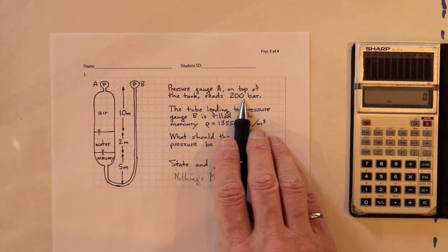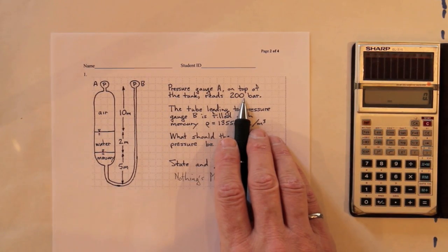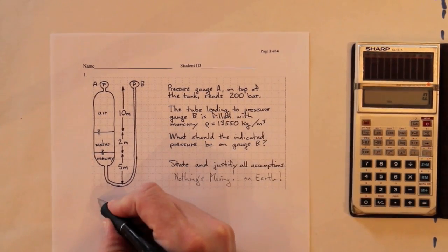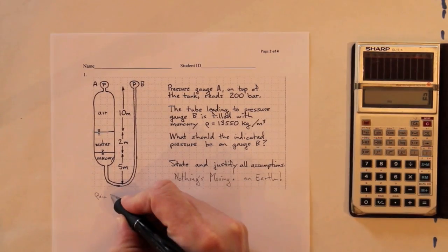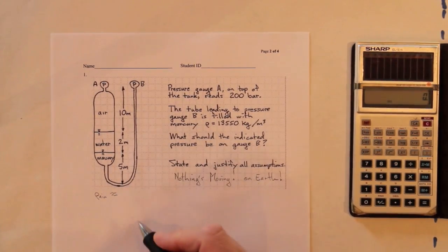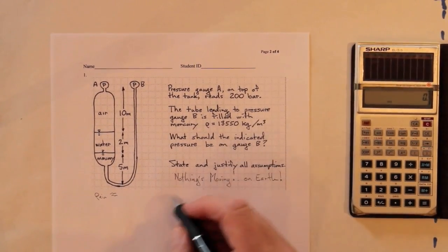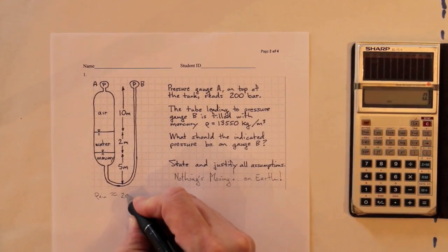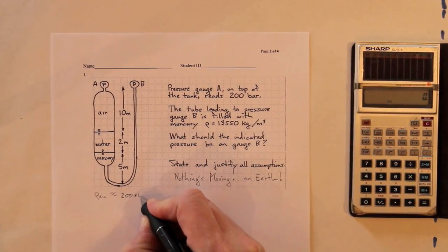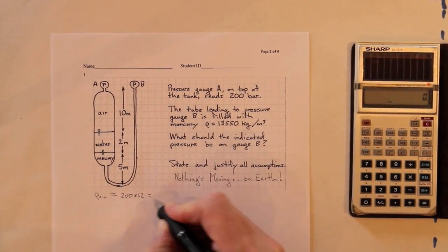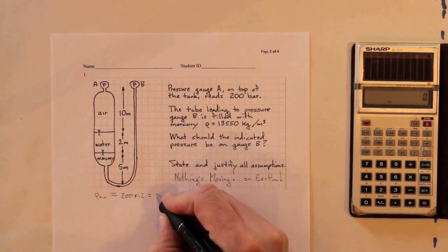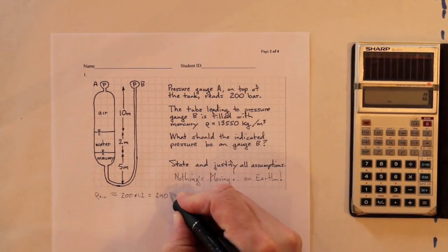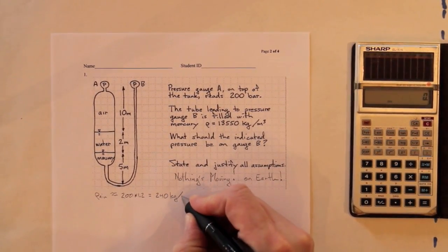its density will be about 200 times as much as it is at atmospheric pressure. So, density of air roughly equal to 200 times 1.2 is 240 kilograms per cubic meter.